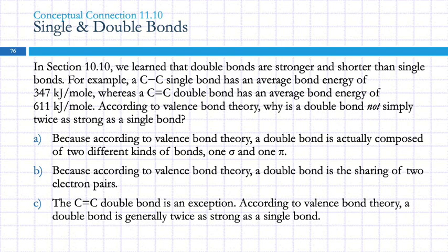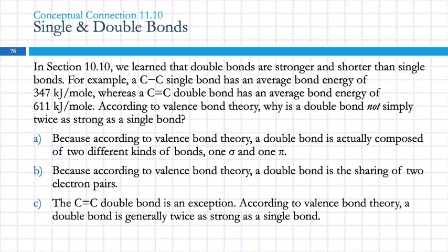A double bond has that one sigma bond, which is a really good overlap and really strong, and then it's got that pi bond where the orbitals are kind of stretching to reach each other and can't overlap as well. So that second bond is weaker. According to valence bond theory, a double bond is actually composed of two different kinds of bonds: one sigma and one pi. Because it's not two of the same bond — it's one strong sigma bond and then a weaker pi bond — it will not be twice as strong.